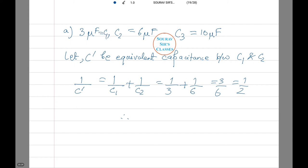C₁, C₂, C₃. Now, let C' be the equivalent capacitance between C₁ and C₂. Therefore, 1 by C' equals 1 by C₁ plus 1 by C₂ equals 1 by 3 plus 1 by 6 equals 3 by 6 which is equal to half. Therefore, C' equals 2 μF.